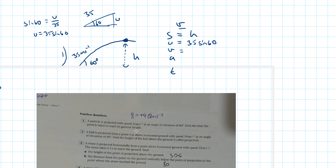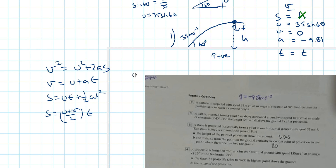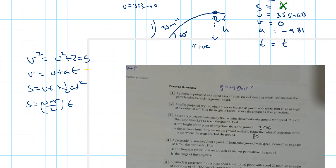The final vertical speed at the greatest height is always zero — the ball stops momentarily before falling back down. Taking upwards as positive, acceleration is minus 9.81 due to gravity acting downwards. We want to find time t. Since we're not interested in the height s, we cross it off and look for a formula without s, which is v equals u plus at.